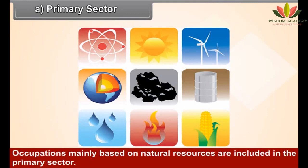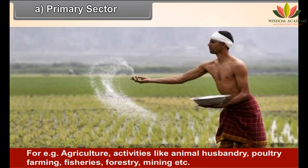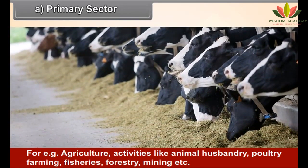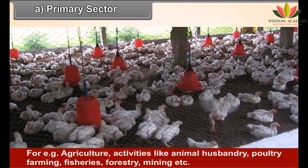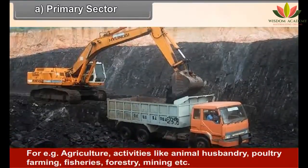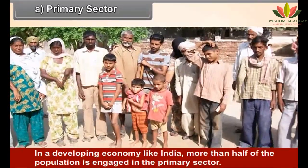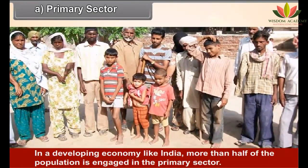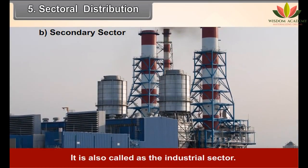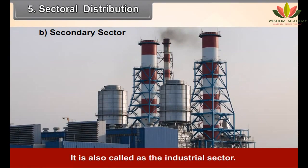The Primary sector is also called the agricultural sector. Occupations mainly based on natural resources are included in the primary sector — for example, agriculture, animal husbandry, poultry farming, fisheries, forestry, mining, etc. In a developing economy like India, more than half of the population is engaged in the primary sector.